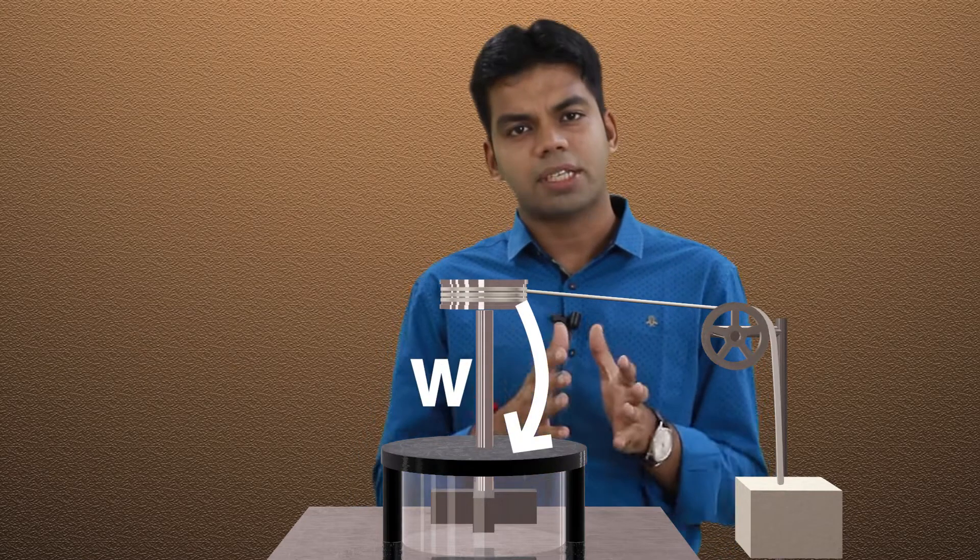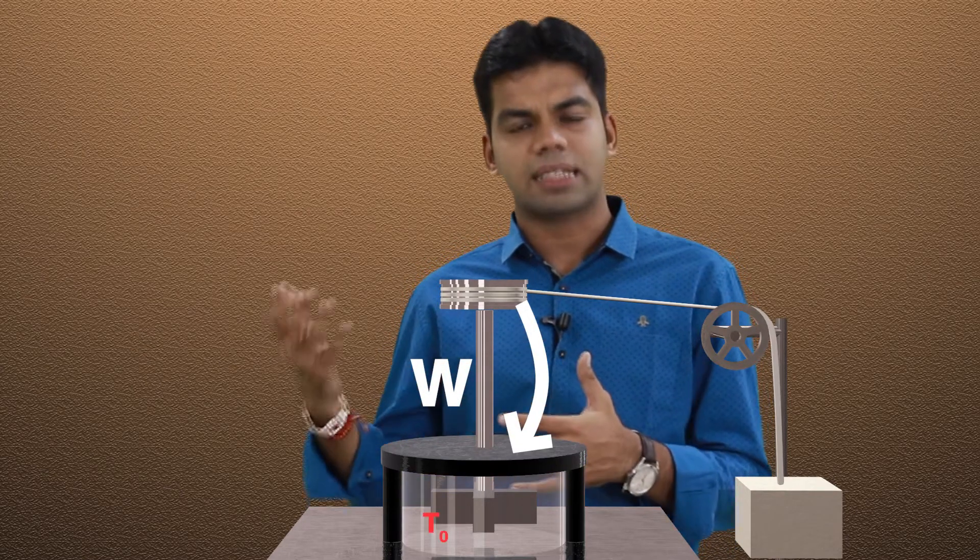Now what he did was he dropped the weight. On dropping the weight, this stirrer will rotate and as a result the work is done on the system, on the gases, on the fluids, and the temperature of that gas will increase. Initial temperature is T0.